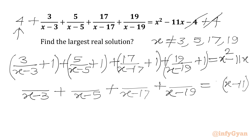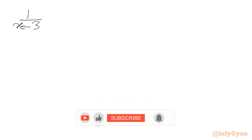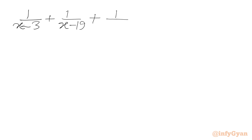In place of x we will write 1 now, giving us 1/(x-3) + 1/(x-5) + 1/(x-17) + 1/(x-19). Now we will club these two terms from LHS altogether and club these two terms altogether: 1/(x-3) + 1/(x-19) + 1/(x-5) + 1/(x-17) = x - 11.